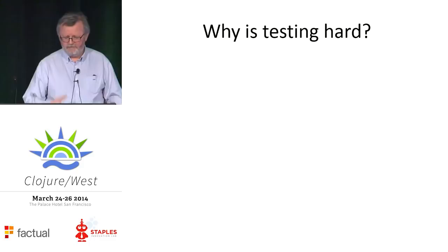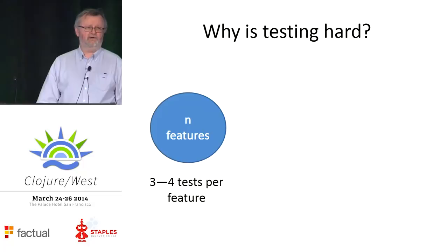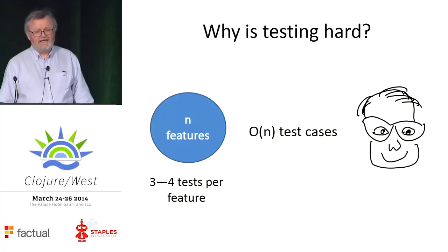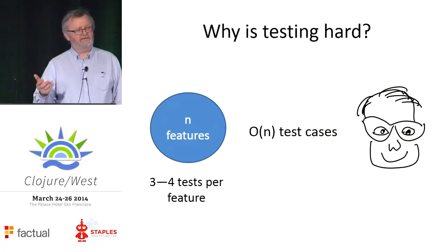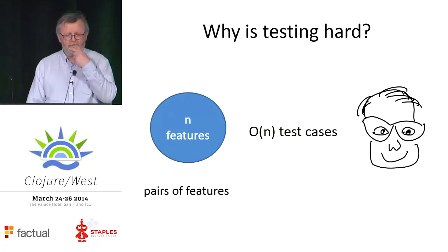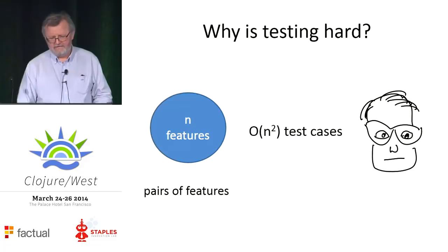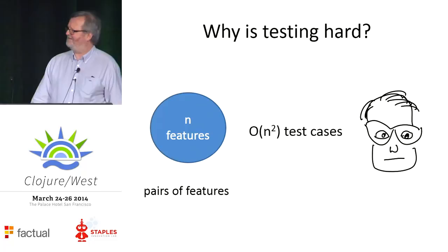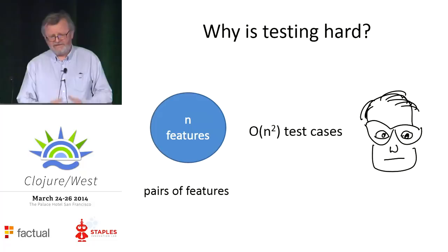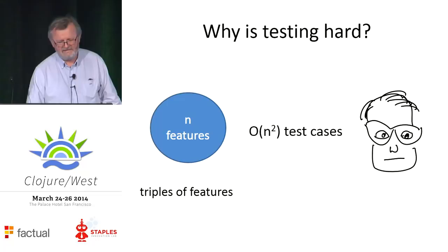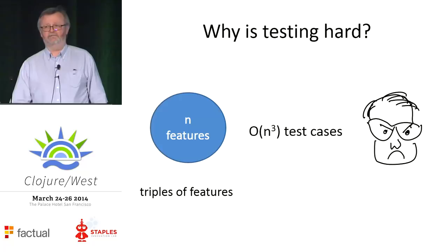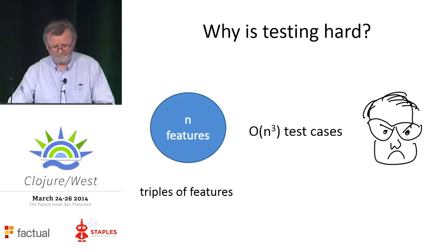So why is testing hard? Fundamentally, suppose you're writing automated tests for a system and you've got, say, n features that you want to test. What are you going to do? You're going to write maybe three or four tests per feature. That's okay — that's a linear amount of work. But we all know that you won't catch all of the bugs that way, because there are some bugs that only appear when you use two features together.